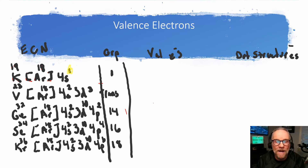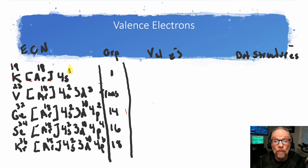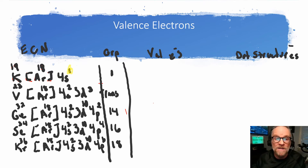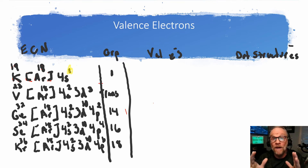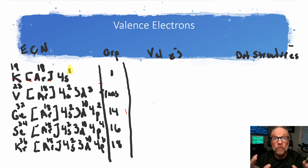To save some time, I went ahead and wrote the electron configurations out for some elements going across a period. We will look at the number of valence electrons for each, and I'll show you on the electron configuration how to find the valence electrons. Then we will look for group patterns as well.